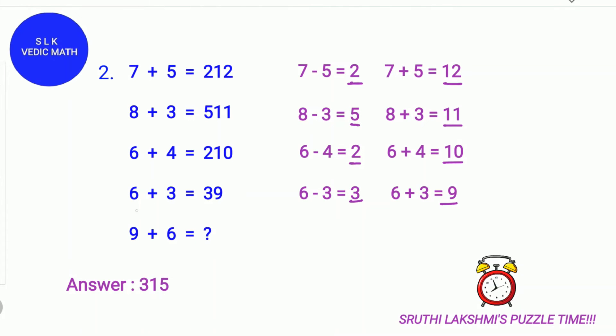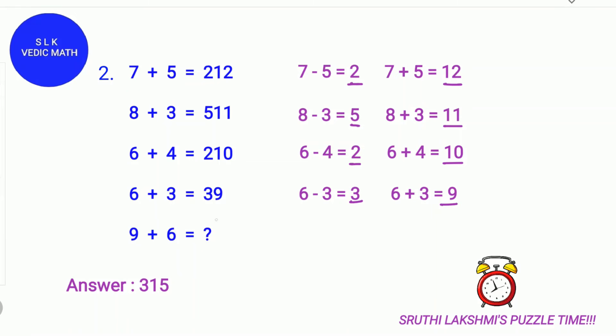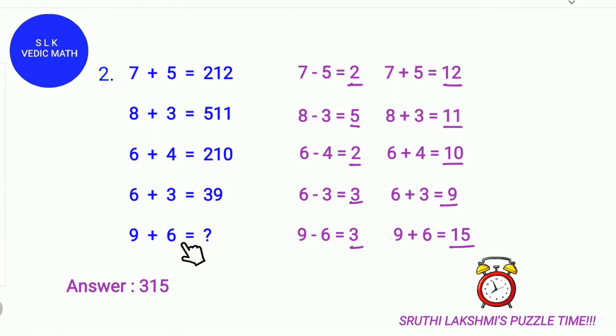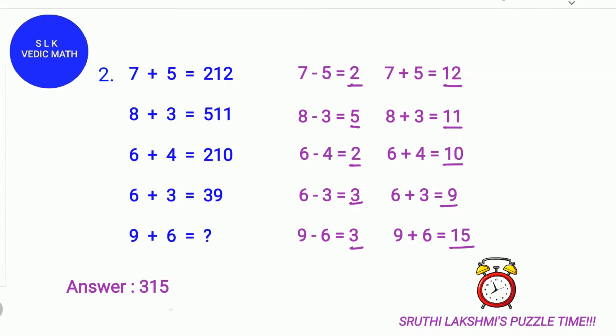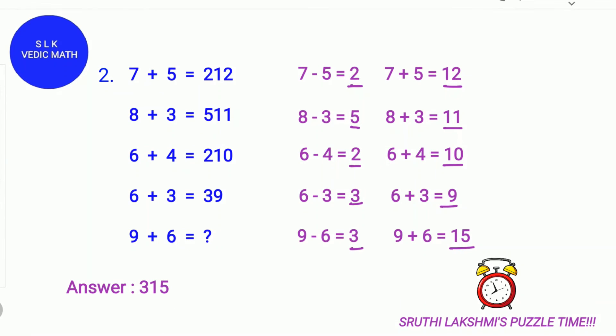For 6 plus 3, we did 6 minus 3, which is 3. And 6 plus 3, which is 9. For 9 plus 6, we do 9 minus 6, which is 3. And 9 plus 6, which is 15. This is how we got the answer 315.